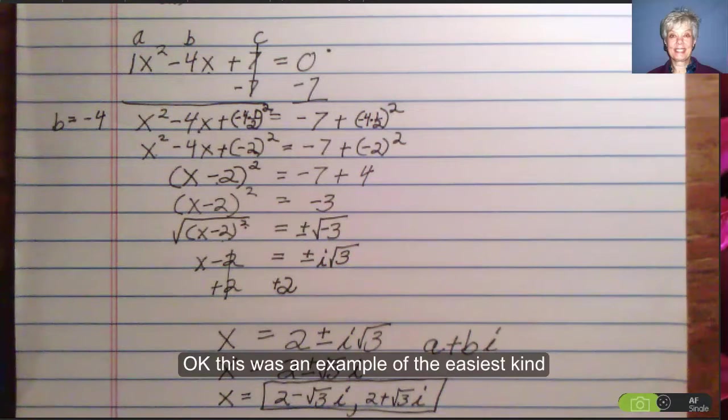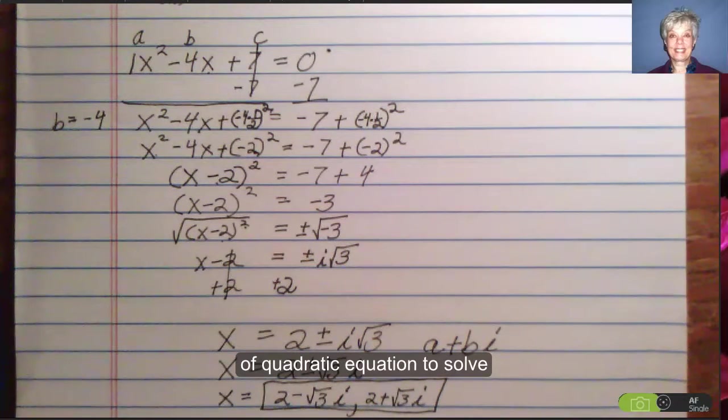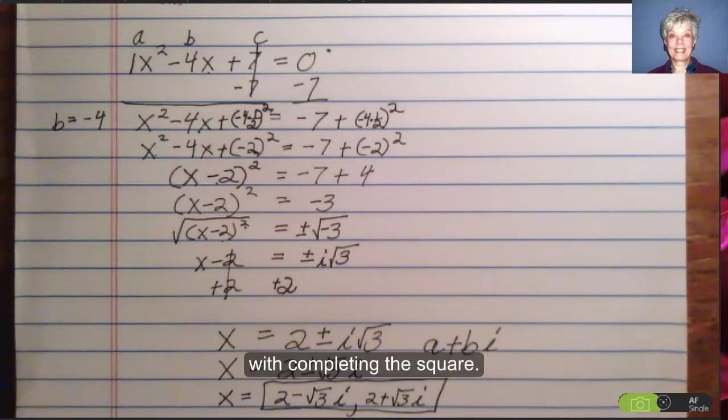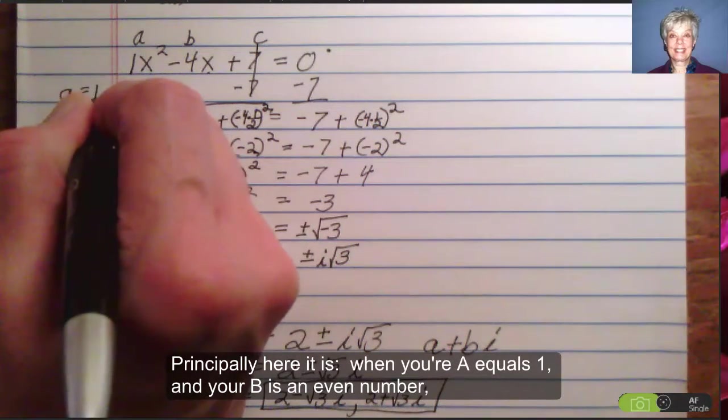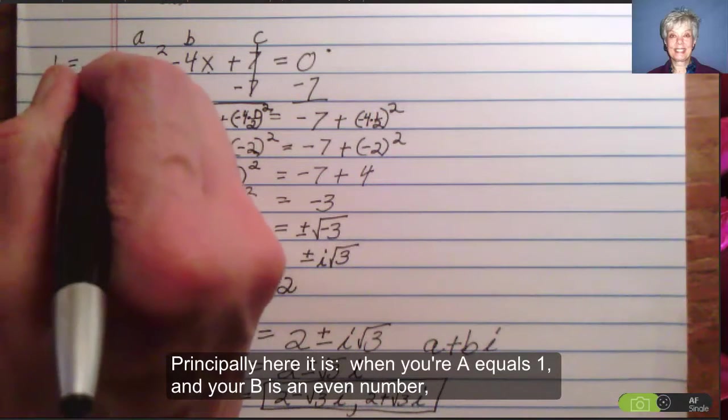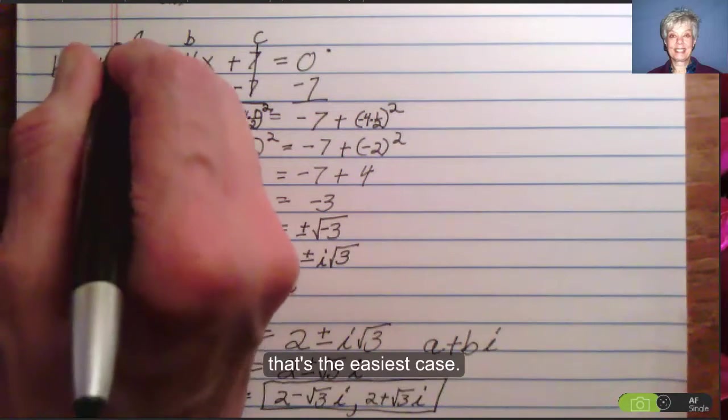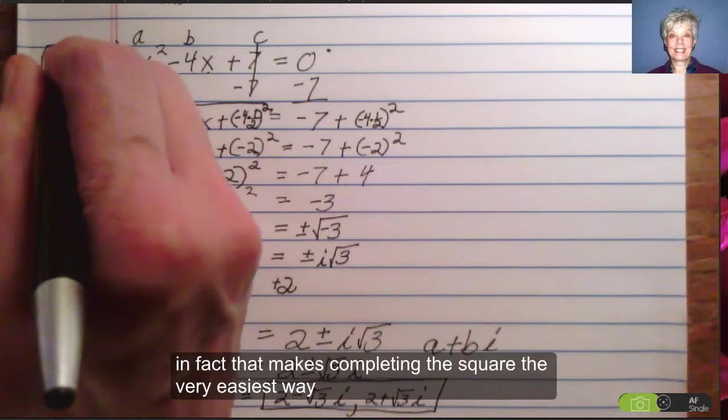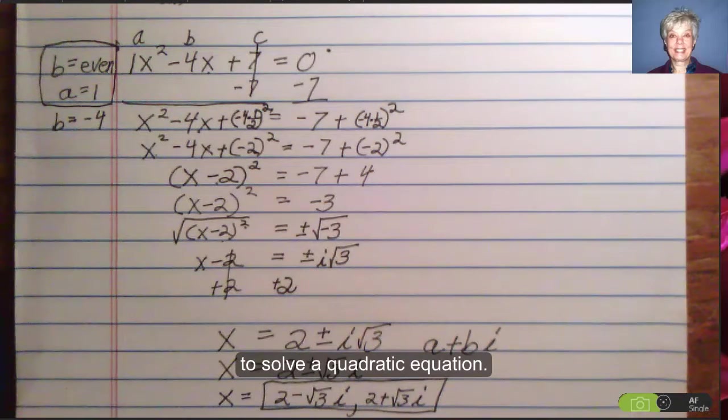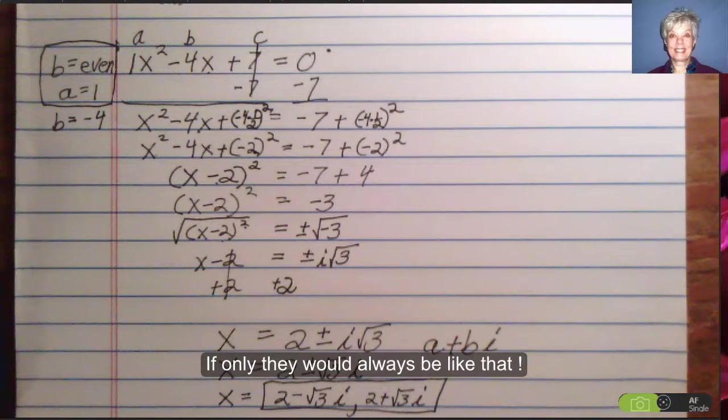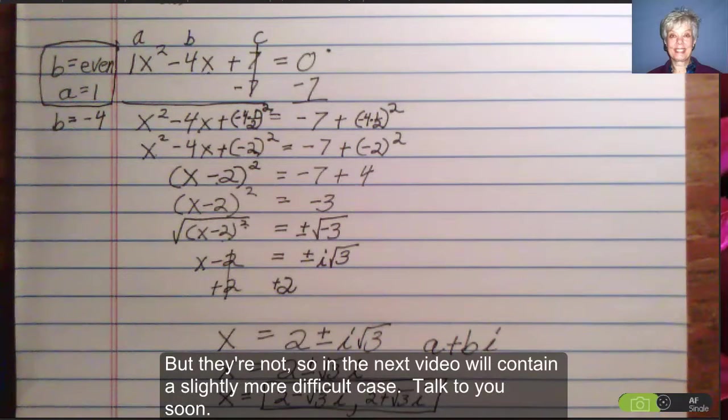Okay, this was an example of the easiest kind of quadratic equation to solve with completing the square. Principally, here it is: when your a equals 1 and your b is an even number, that's the easiest case. In fact, that makes completing the square the very easiest way to solve a quadratic equation. If only they would always be like that, but they're not. So the next one we do is going to be a little more difficult. Talk to you soon. Bye.